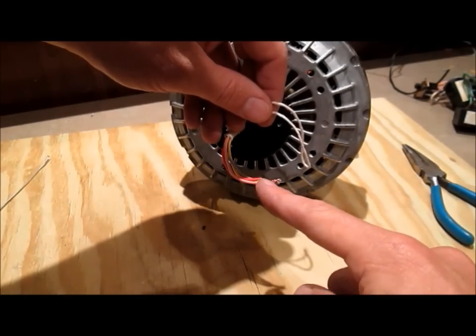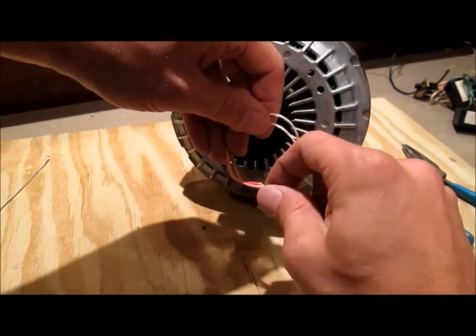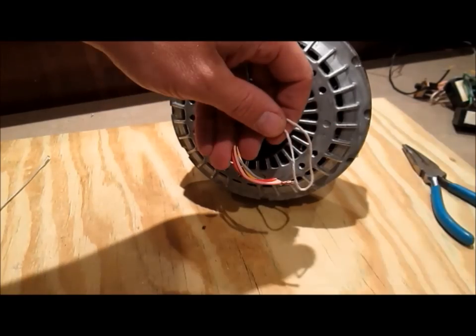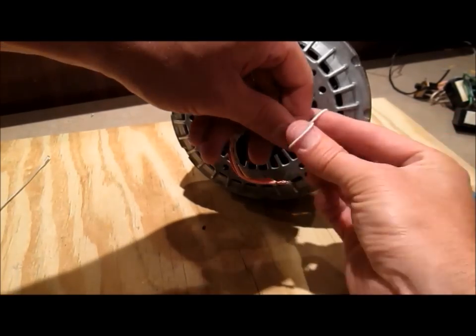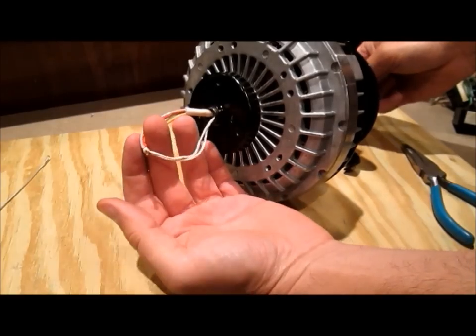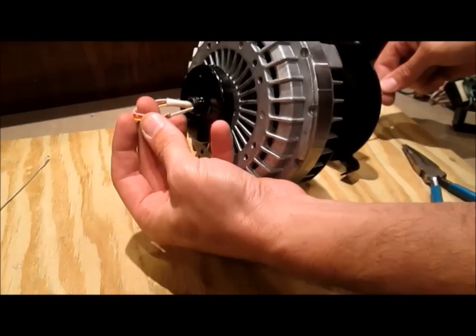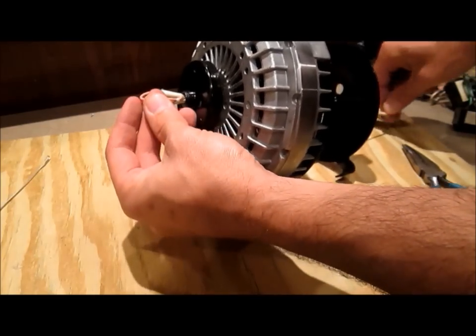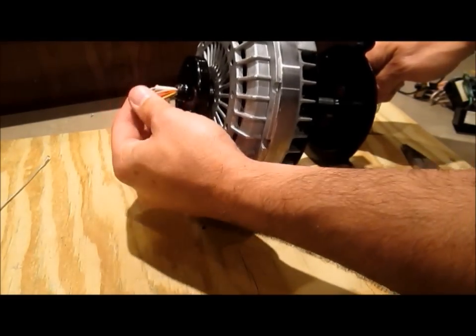And I've peeled these wires back a little bit and twisted them into a knob there. Now I'm going to take this string and form it into a noose and put it over the end of that knob. Now I'm going to use that to pull this wire back through to the other side.